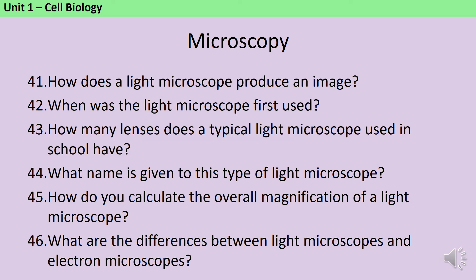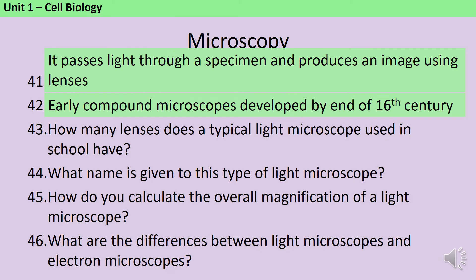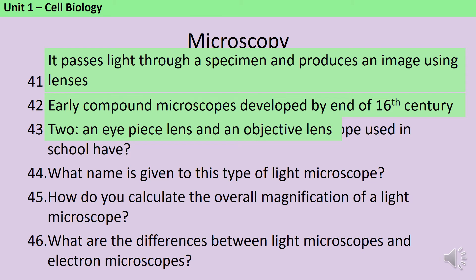Light microscopes work by passing a beam of light through a specimen and then using lenses to produce an image. The first light microscopes were in use as early as the late 16th century. Typically the light microscopes used in school have two lenses — an objective lens and an eyepiece lens. These types of microscope are called compound microscopes. To calculate the overall magnification, you multiply together the magnification, or power, of the two lenses.